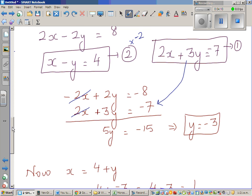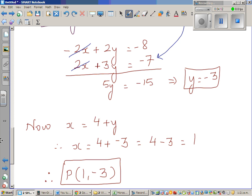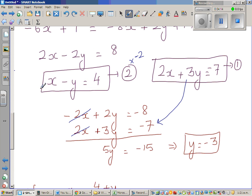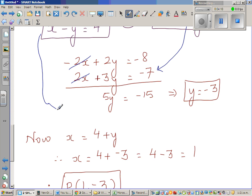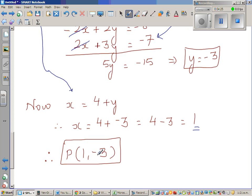So that means we know what is x. If you make x the subject here, x can be written as 4 + y. So 4 + (-3) is 1.